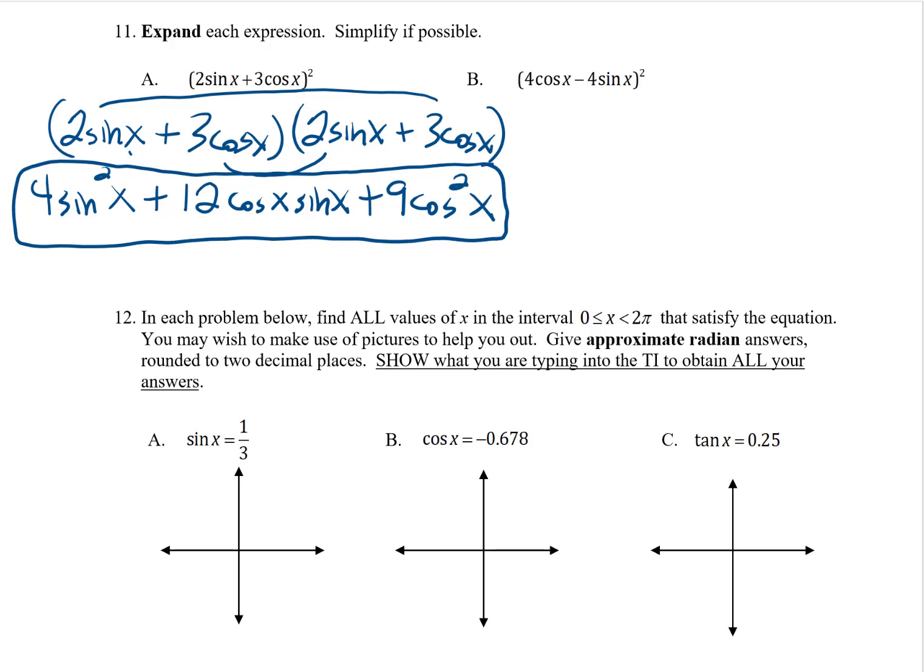Part B is similar, with a slight variation at the end. So of course, I'm going to write it out as the FOIL problem. And then I can start my FOILing. I'm going to have 16 cosine squared x. The inner and outer each make negative 16 cosine x sine x. So all of that would make negative 32 cosine x sine x. And then I have, for the end, 16 sine squared x.